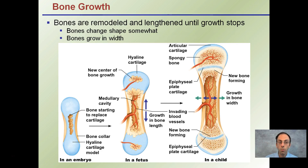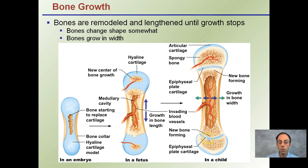Starting with bone growth, bones are remodeled and lengthened until growth stops. Bones change shape a little bit depending on the conditions they may face, and bones also need to grow in width as we progress from the embryo to the fetus to a child to ultimately the adult stage. At the embryonic stage we have a high amount of cartilage present within the bones, and over time we see an increase in the replacing of that cartilage with ossification in this newly forming bone.